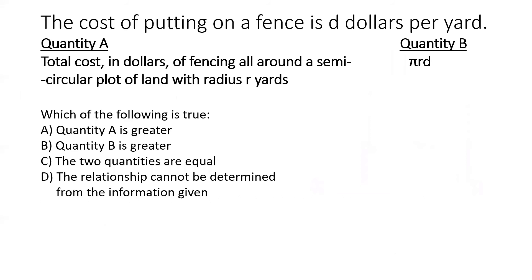Now, let's go on to another question also of this type of quantitative comparison. The cost of putting on a fence is D dollars per yard. We're given two quantities. The first one, quantity A, is the total cost in dollars of fencing all around a semicircular plot of land with radius R yards. And the second quantity, quantity B, is pi R D.